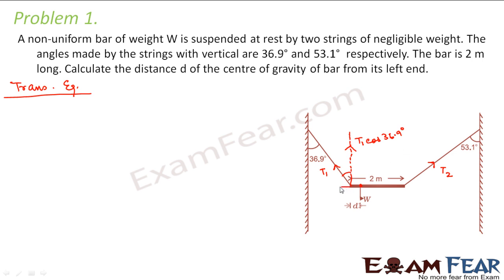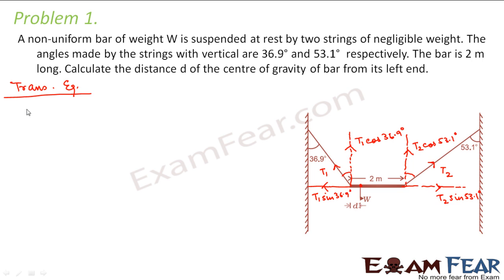Similarly, on the other side, the vertical component is T2 cos 53.1 degrees and the horizontal component is T2 sin 53.1 degrees. For translational equilibrium, the net force along the horizontal direction should be zero, so T1 sin 36.9 degrees should equal T2 sin 53.1 degrees, since they act in opposite directions.